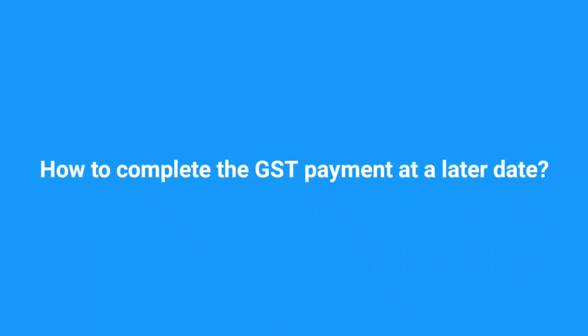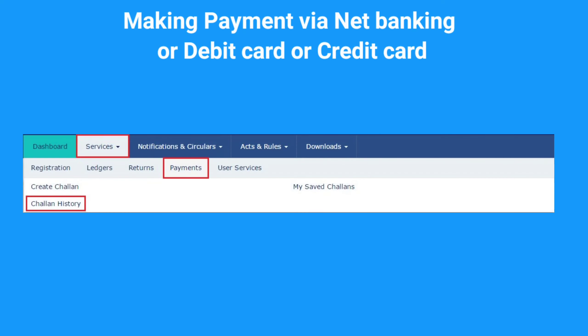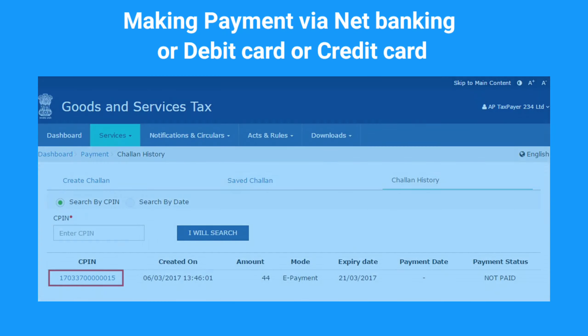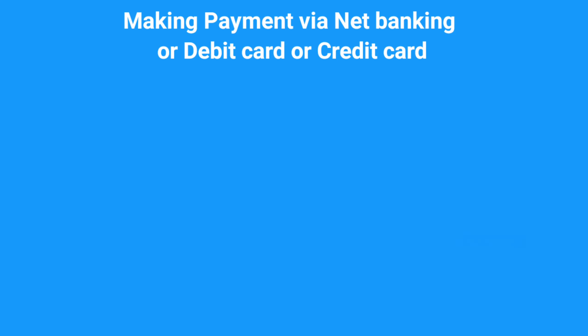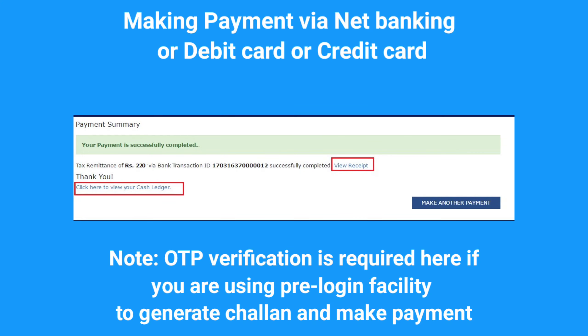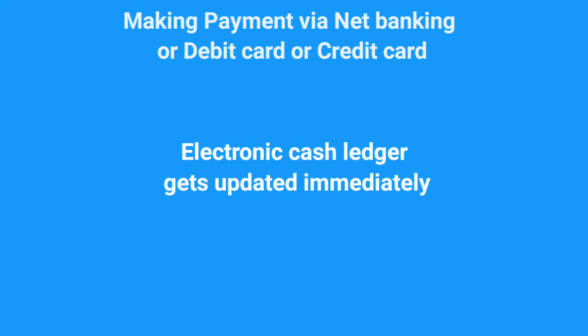Now let's move on to how to complete the GST payment at a later date. To complete GST payment later against a challan that was generated earlier — if the payment mode is net banking or via debit card or credit card — log in to the GST portal, go to challan history available under the payment option by clicking on Services, click on the hyperlink against the appropriate CPIN, select the bank listed for card payment or net banking, and finish the payment. A receipt gets generated with the CIN, i.e. Challan Identification Number, upon successful payment, and the cash ledger gets updated immediately.